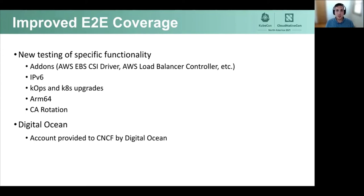Another area of focus has been end-to-end testing. We recently began testing more add-ons and running their own test suites to confirm functionality. We also have tests for IPv6 in AWS as we work to stabilize those efforts. Upgrades of both Kubernetes and kops are now being tested, in addition to ARM64 and CA rotation. We recently added testing in DigitalOcean, which helped its kops support get promoted to beta, and we plan to do the same with Azure soon. All of this testing aims to catch bugs earlier in the kops release process to offer a more stable experience to users.